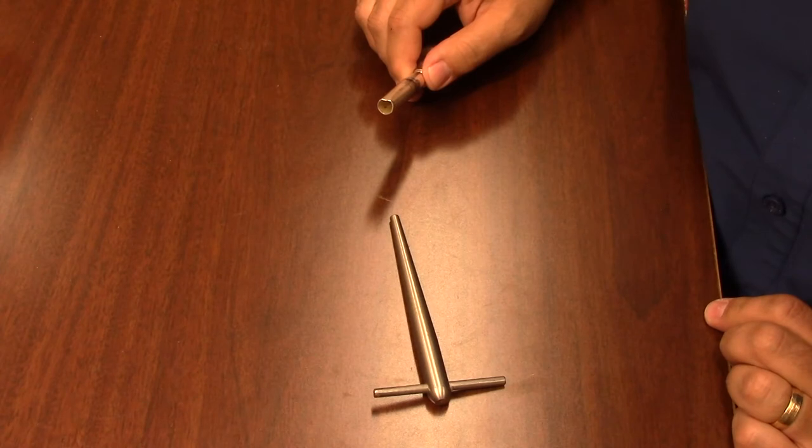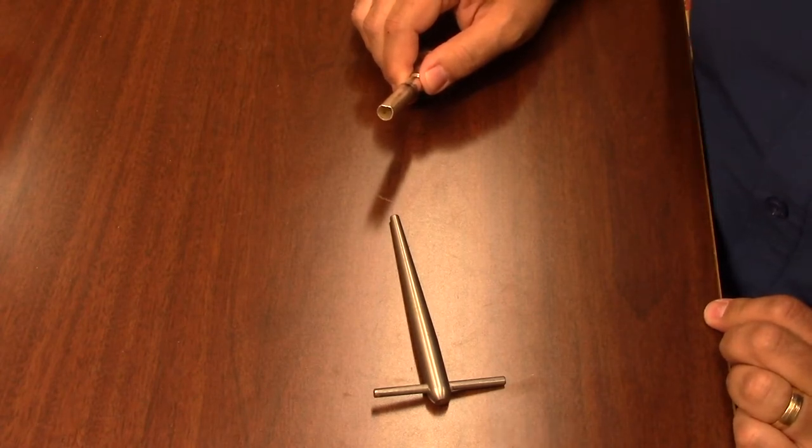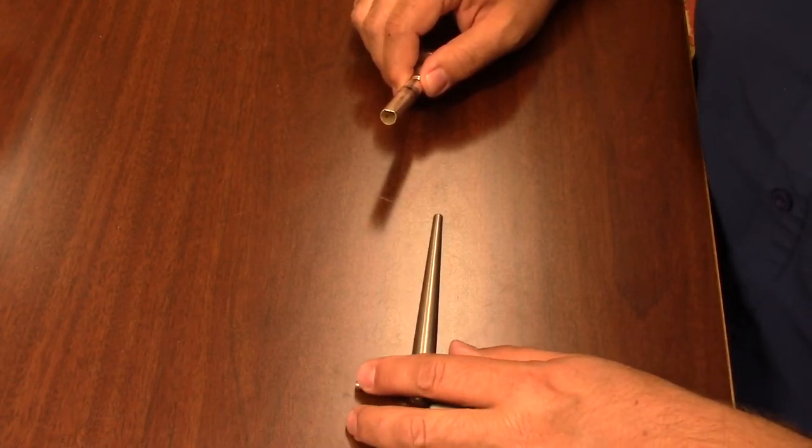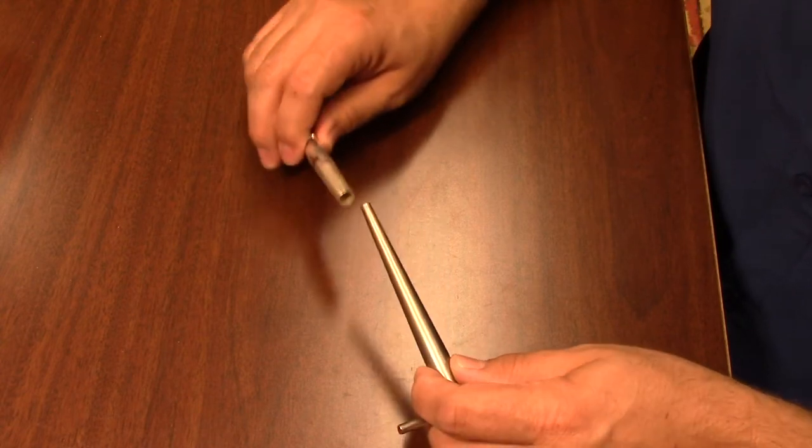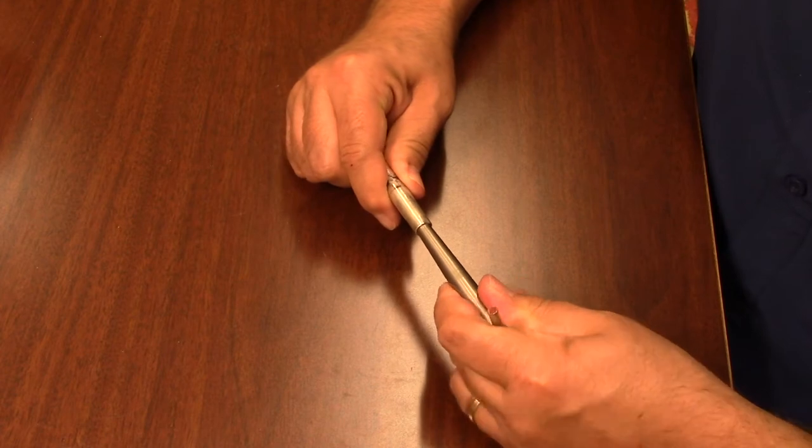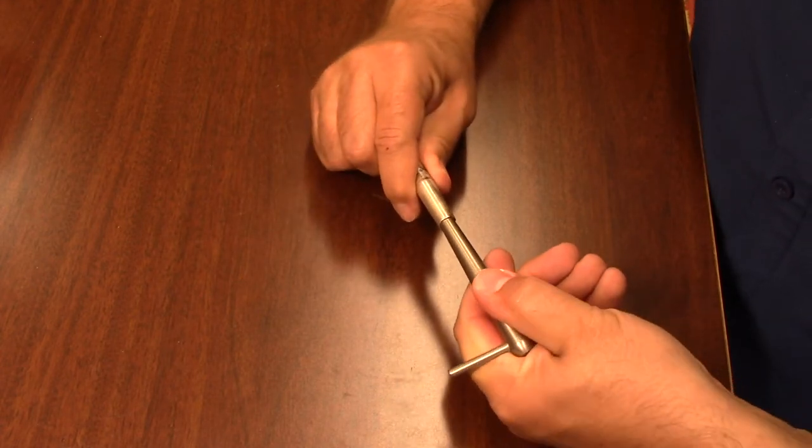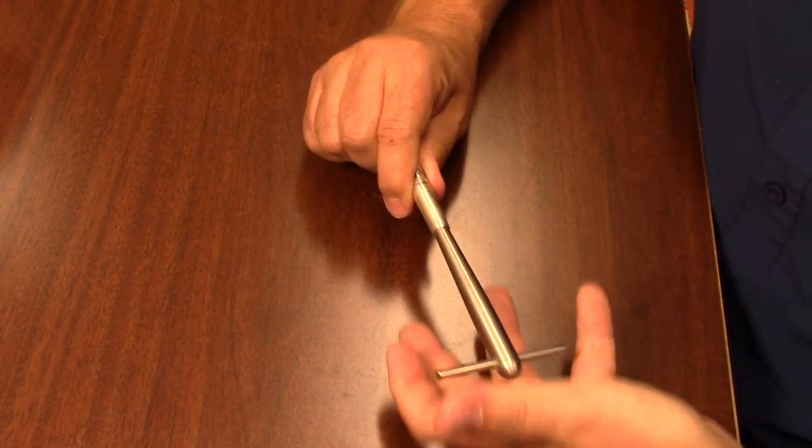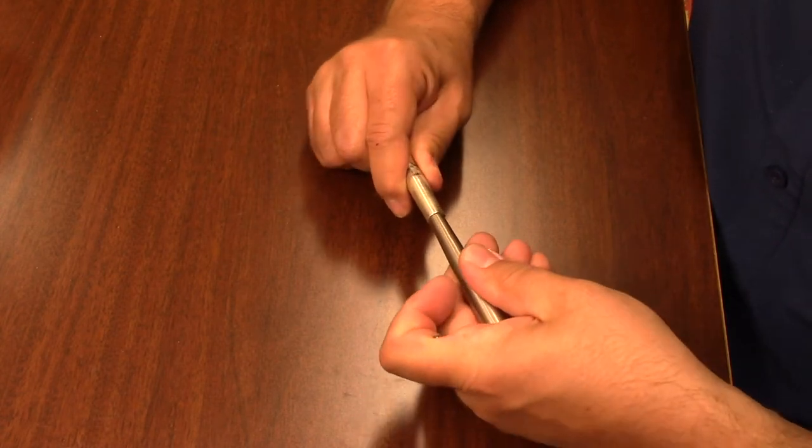With a mouthpiece truer we can very easily and quickly correct this problem. Now the key to this is using gentle and consistent pressure. You're going to insert this into the end of the shank and rotate gently while applying horizontal pressure to push into the mouthpiece.